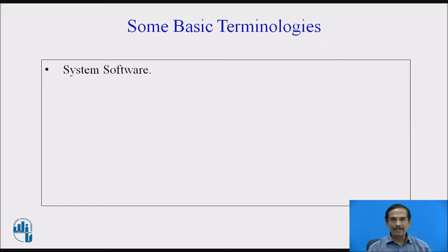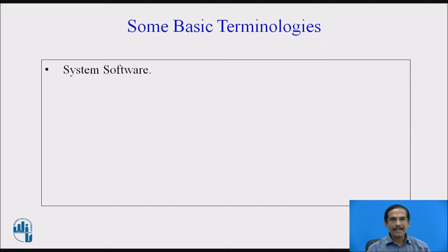Before we start with the topic, let us get acquainted with the basic terminologies related to our discussion. The first terminology is system software. These are softwares made for a system to give the desired results as expected by a user. They cannot be modified by a user because they have certain specifications that the system can understand. There is a semantic gap between the application domain and the execution domain, due to the human being not able to understand the machine and the machine not able to understand the human.